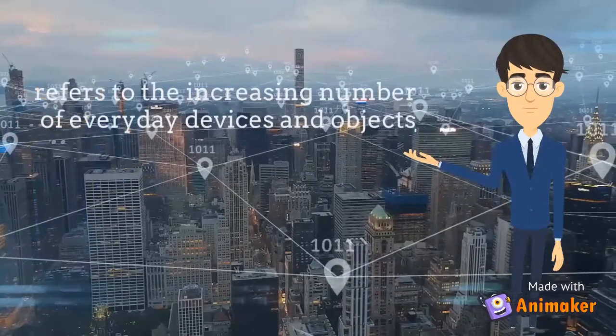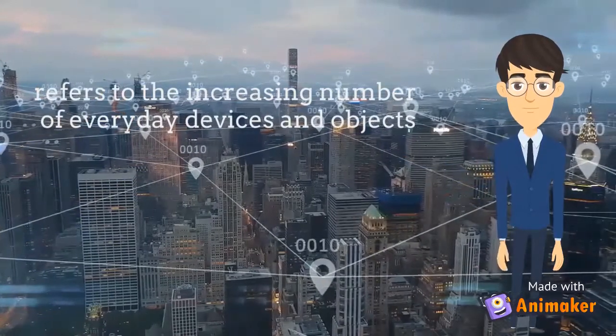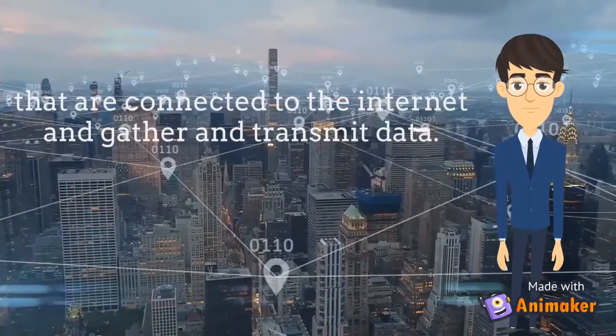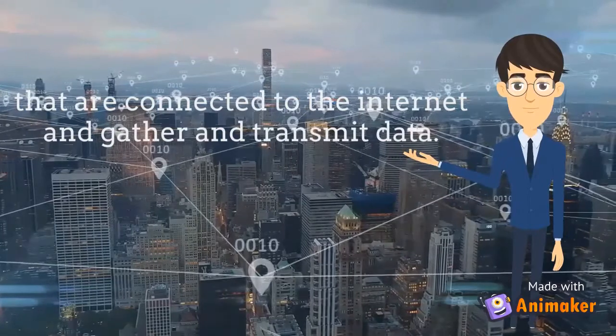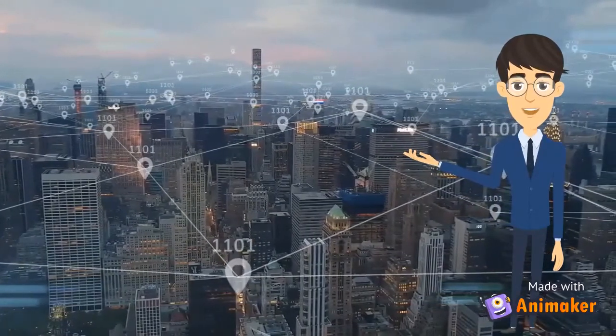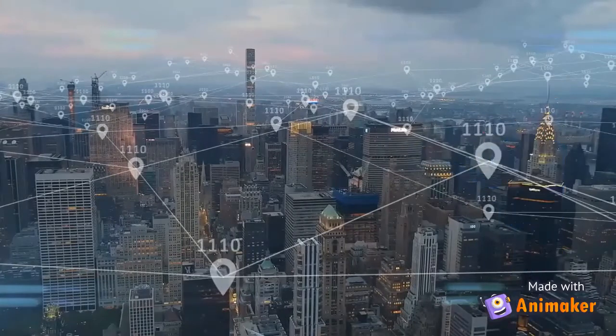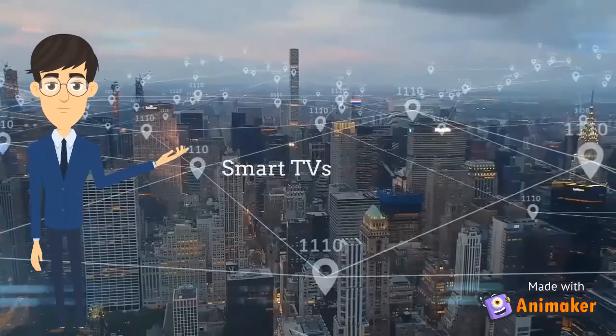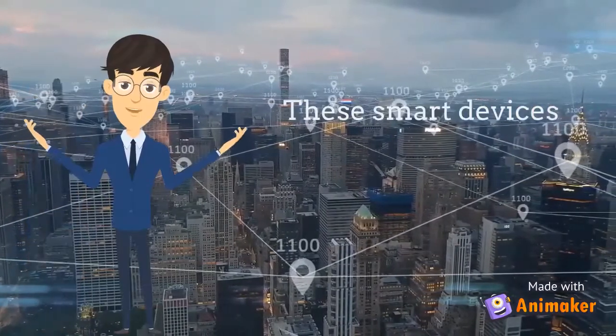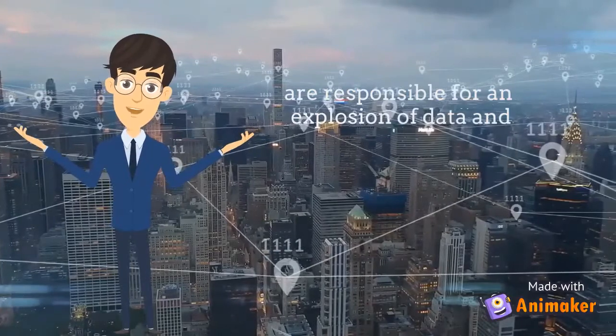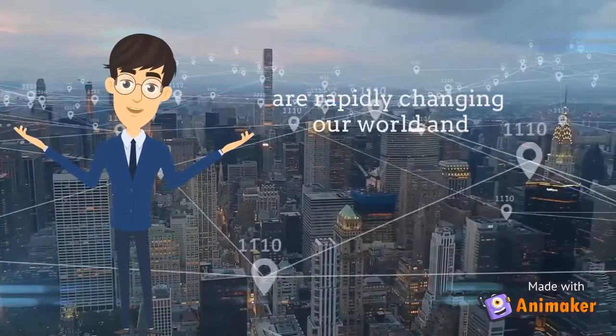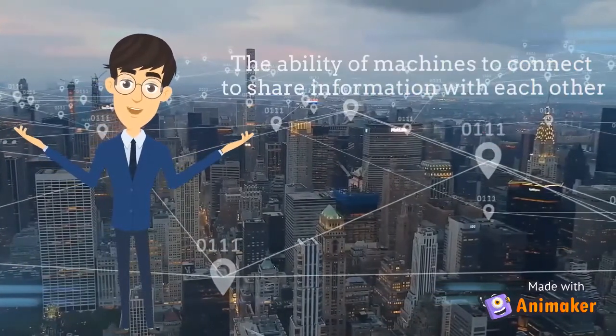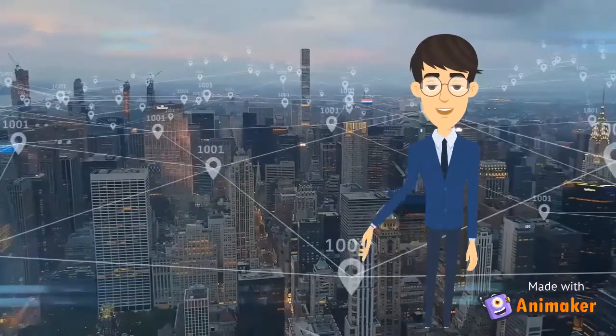The Internet of Things refers to the increasing number of everyday devices and objects that are connected to the internet and gathering and transmitting data, such as smartphones. And we now have smart watches, TVs, and refrigerators. These smart devices are responsible for an explosion of data and are rapidly changing our world and the way we live in it. The ability of machines to connect and share information with each other is a key part of the IoT.